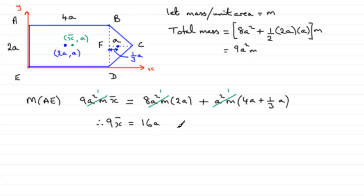And then for this bit, 4A plus a third A, well that's 12 thirds plus another third, that's 13 thirds A. And what can we do next? We can add these together, this is going to be 48 thirds plus another 13 thirds. So that's going to come to 61 thirds A. So therefore 9X bar equals 61 thirds A. And then if I divide both sides by 9, I get X bar equals 61A over 27.